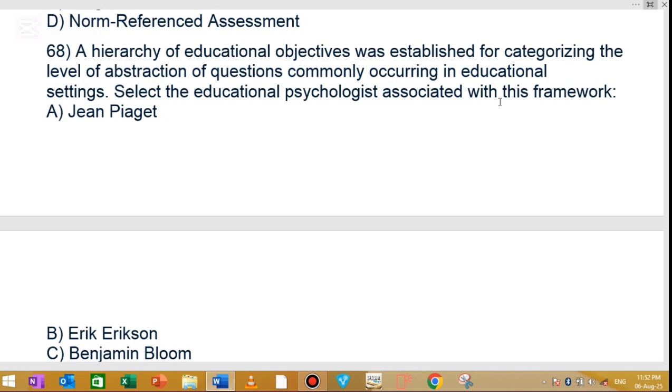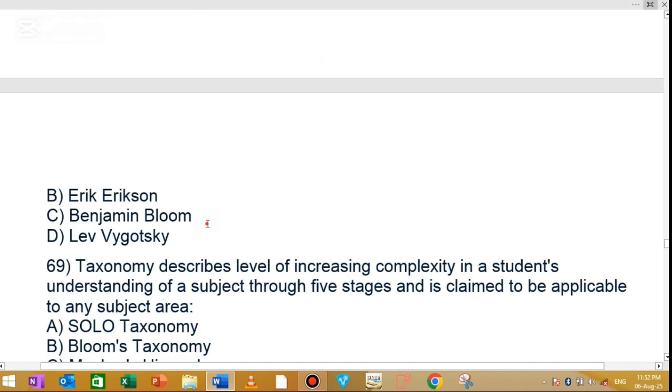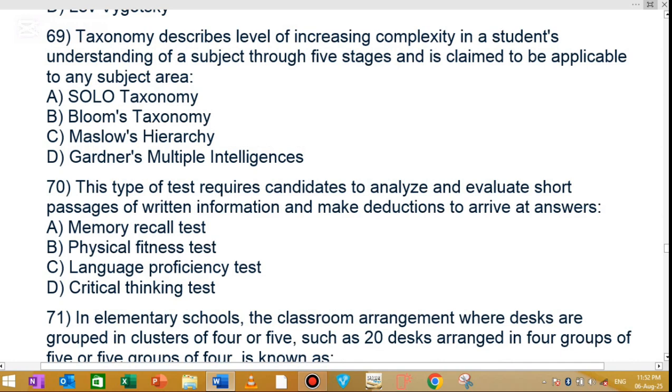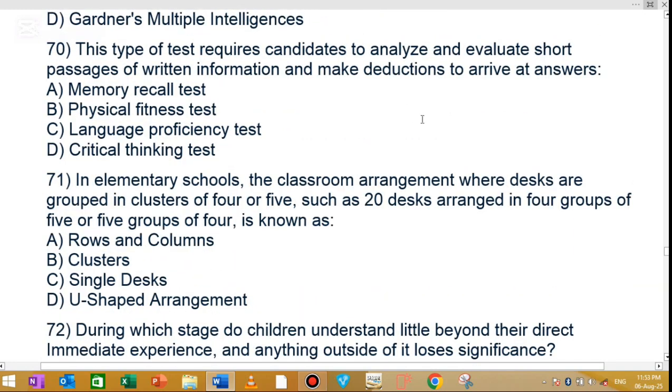MCQ number 69: A taxonomy describes the level of increasing complexity in a student's understanding of a subject through five stages and is claimed to be applicable to any subject areas. Question number 70 asks about the taxonomy applicable to any subject area.